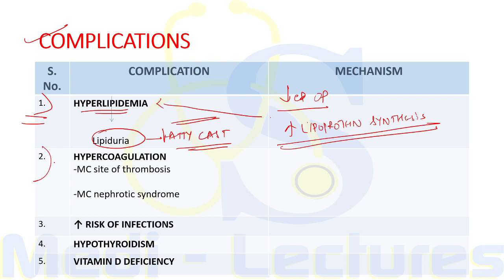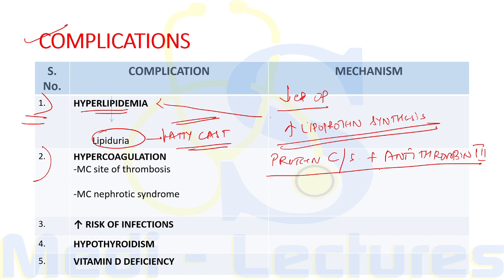The second complication is hypercoagulation. The reason is that protein C, protein S, and antithrombin III are all lost in the urine of patients with nephrotic syndrome. Since these are important anticoagulants, their loss leads to a hypercoagulative state. The most common site of thrombosis is the renal vein, and the most common nephrotic syndrome causing hypercoagulation is membranous glomerulopathy.